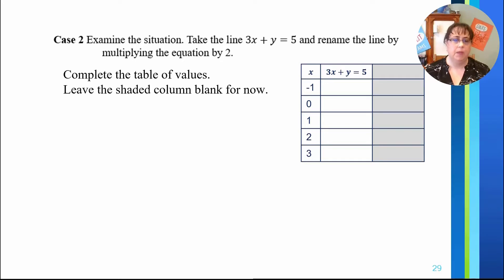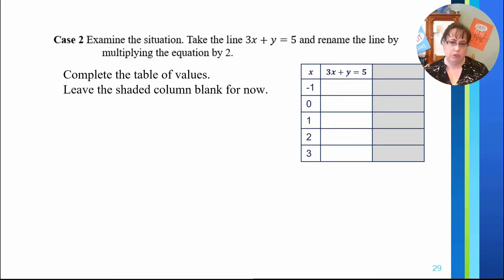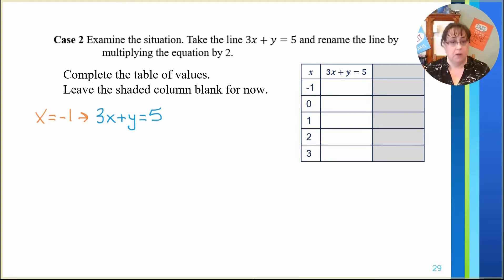So let's look at case number two. Examine the situation: take the line 3x plus y equals 5 and rename the line by multiplying the equation by 2. First, we're going to complete the table of values and leave the shaded column blank for now. We want to take 3x plus y equals 5 and find what y is when x is equal to negative 1, 0, 1, 2, and 3. We'll substitute in x equals negative 1 for 3x plus y equals 5, putting negative 1 everywhere we see an x, and solve for y.